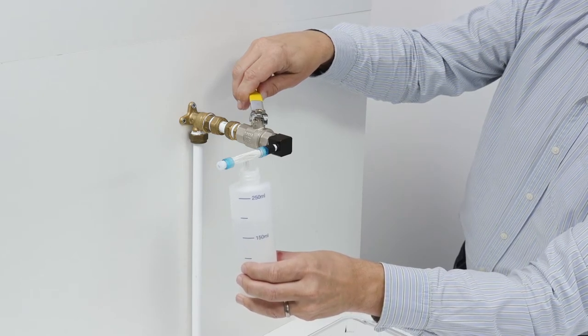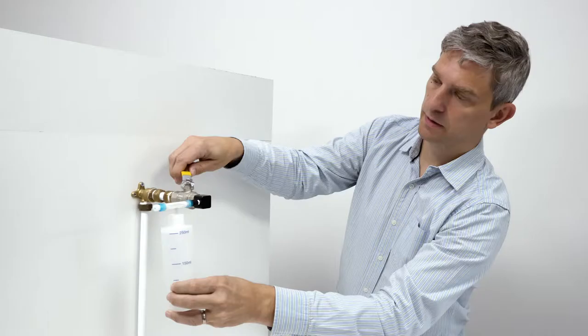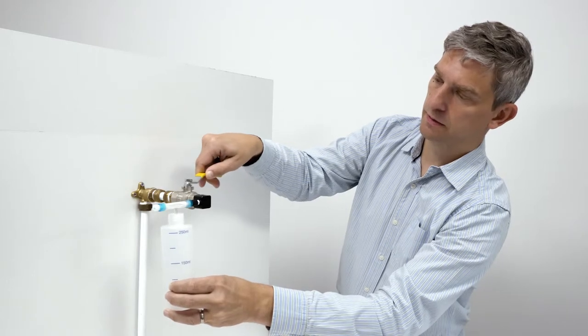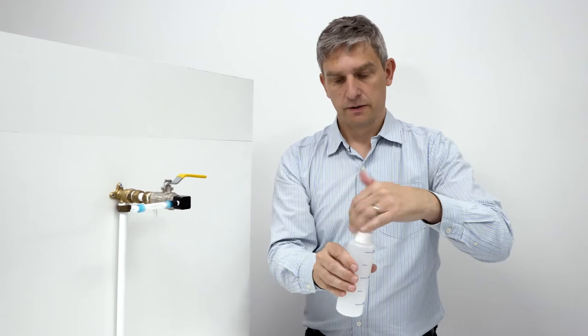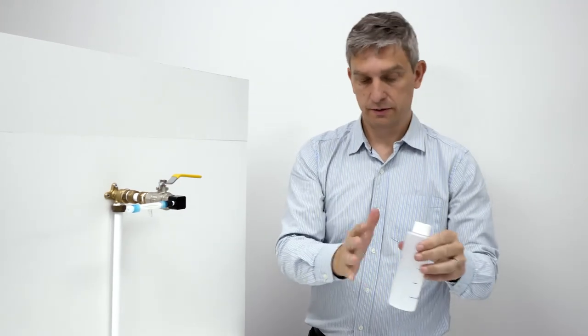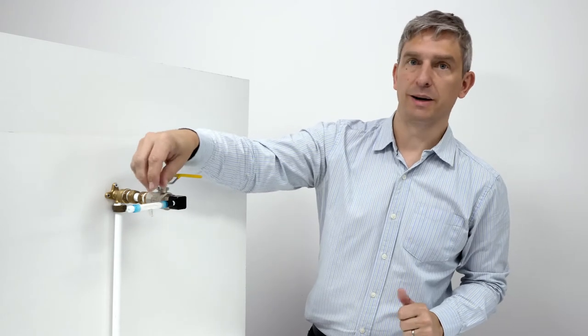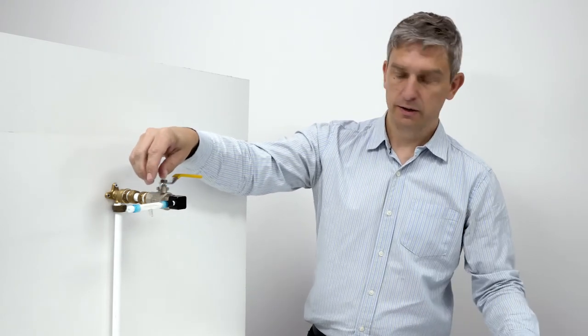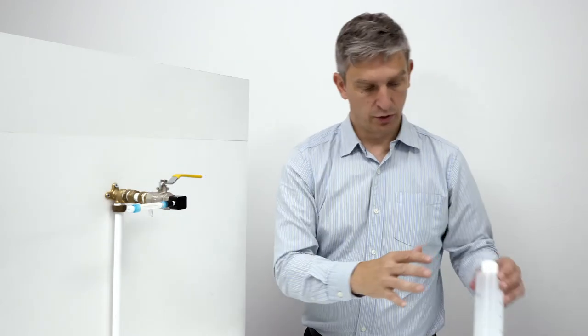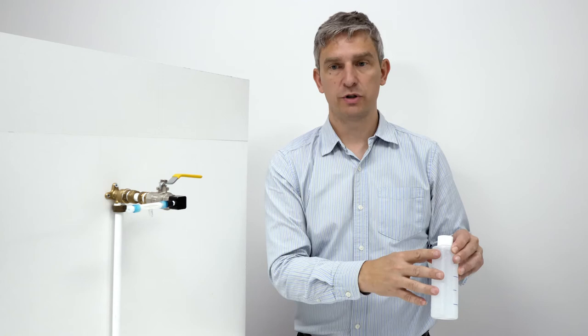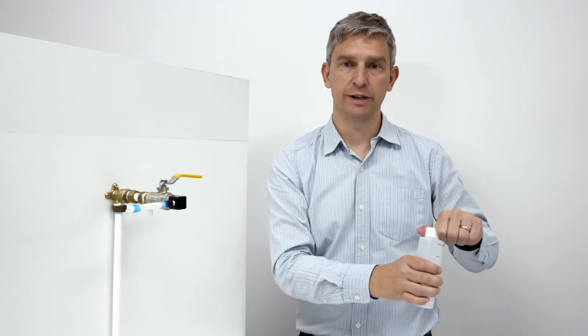Once it reaches the top, we can close the valve. What we've done here is we've passed this 250 milliliters through the filter, and any Legionella bacteria that were present in the sample have now been collected into the filter. This water here can be disposed of—it's no longer required—but the bottle can be reused for the other tests within the test kit.